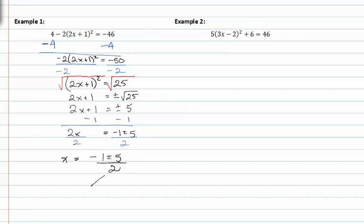Now we have to find those two values. x can equal, if we take the positive 5 option, we'll have -1 + 5, which is 4/2, or just 2.